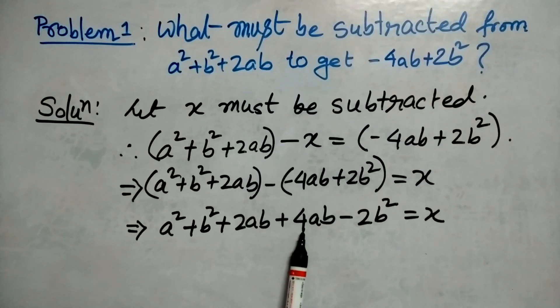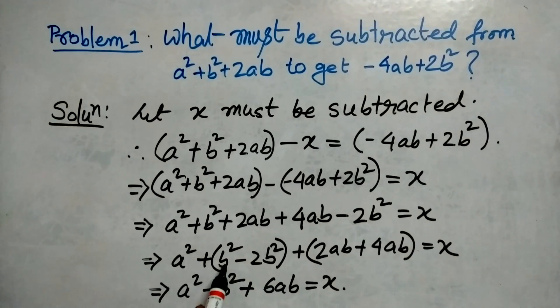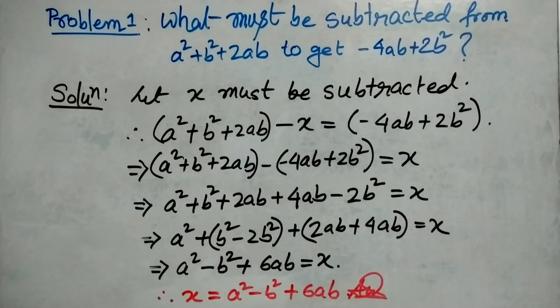We have segregated the like terms and put them in a single bracket. a² remains, b²-2b² is -b², 2ab+4ab equals 6ab. So x equals a²-b²+6ab.